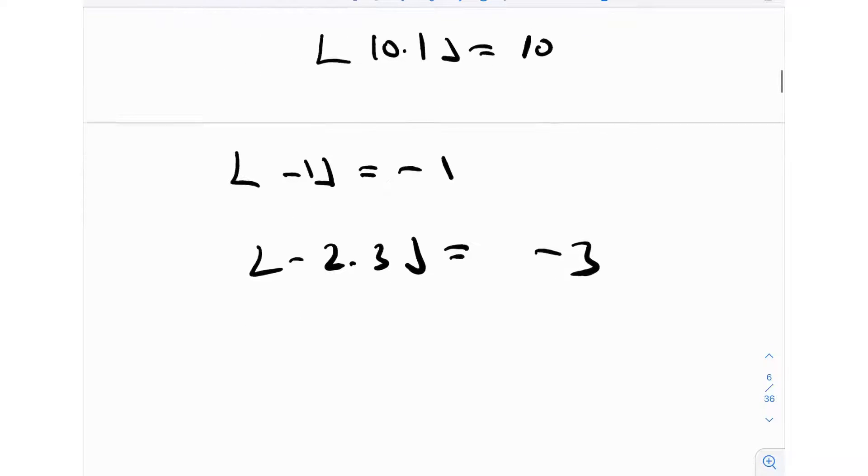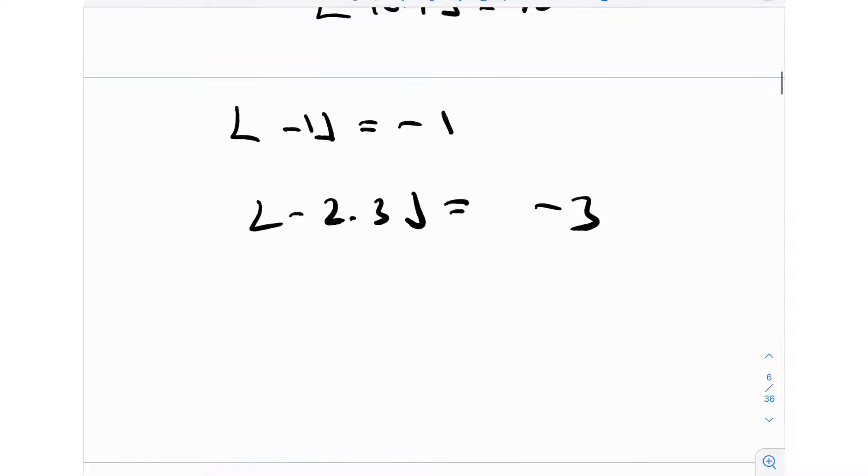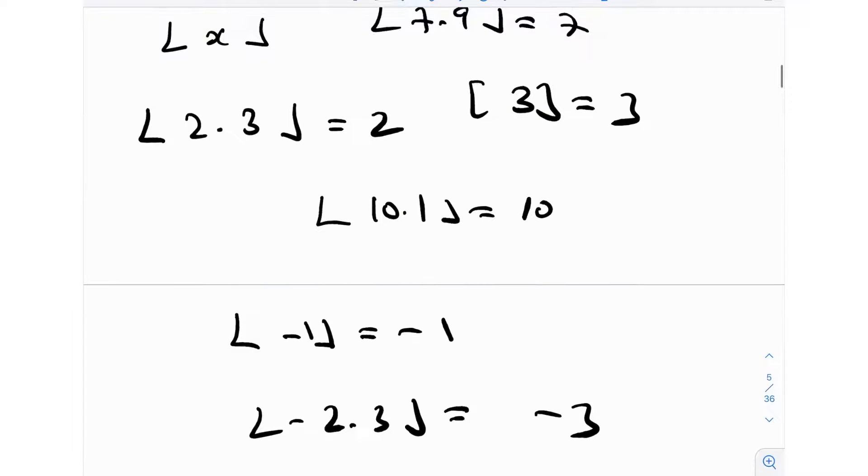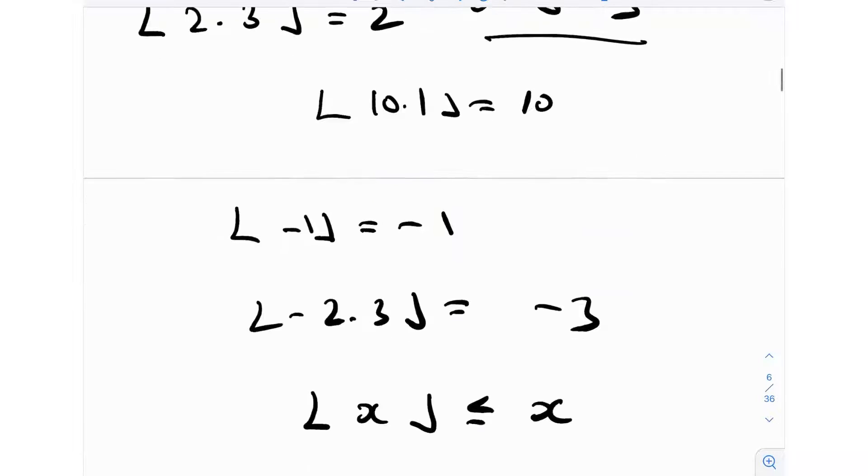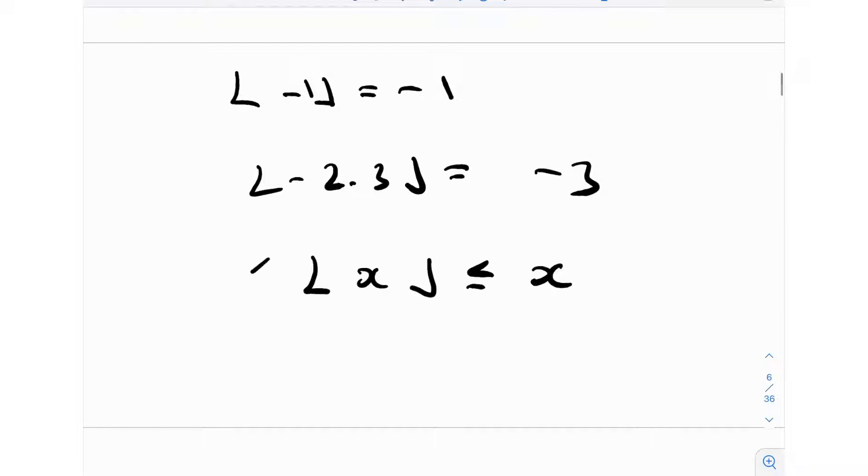Really, because of its definition, it's the greatest integer less than or equal to x, so it is less than or equal to x. It can be equal to x, like we saw, the greatest integer function of 3 is 3, and has to be greater than x minus 1. This is the most important property probably that we will be needing for this question. In fact, it's the only property that we will be needing.